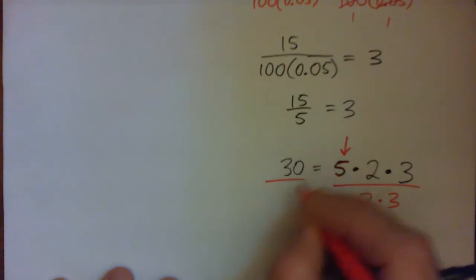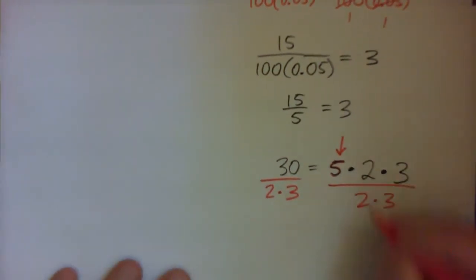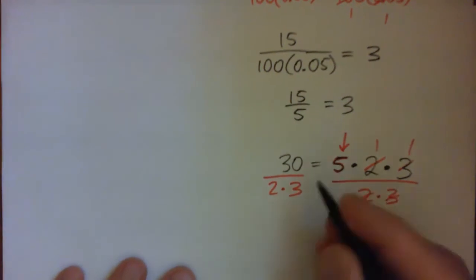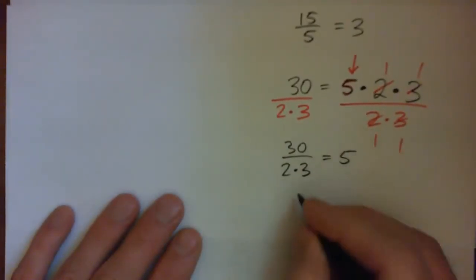And similarly, I can do that over here. And so let's just write this out. The 2's cross cancel, see that? The 3's cross cancel, see that? And so I have 30 over 2 times 3, 30 over 2 times 3 is equal to 5. And of course, that's 2 times 3 is 6. It's just 30 over 6. Well, that's 5, isn't it?